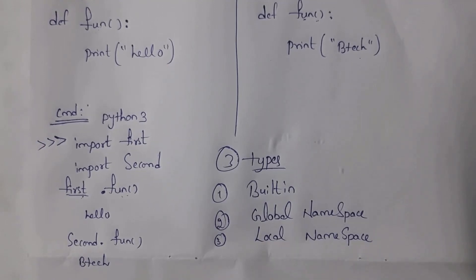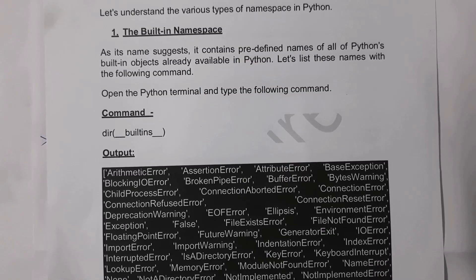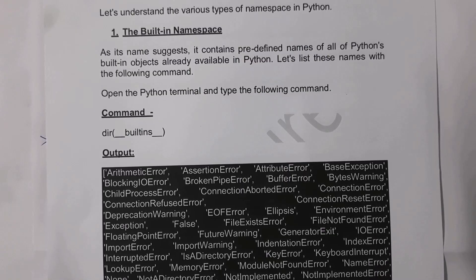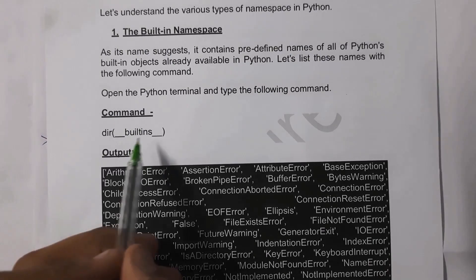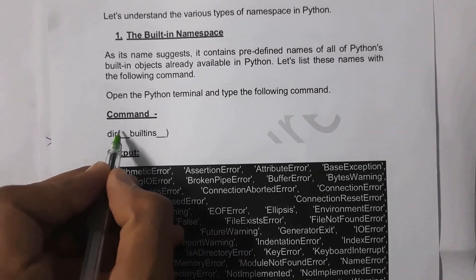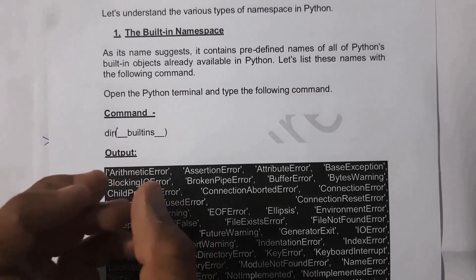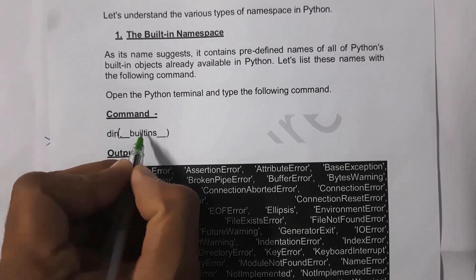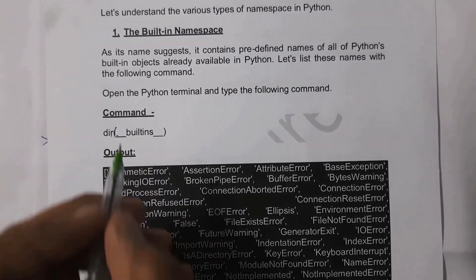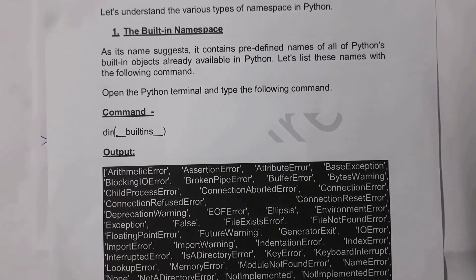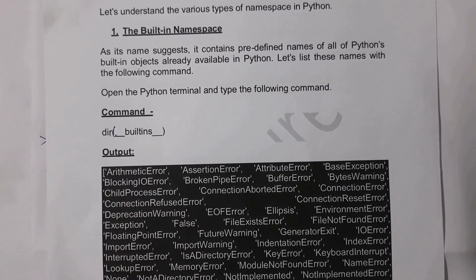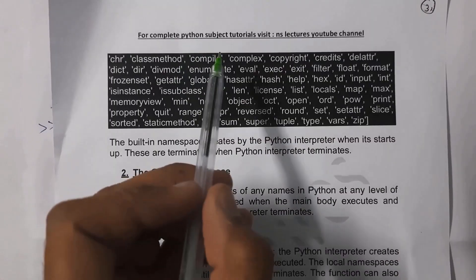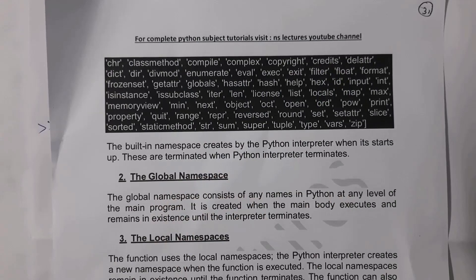Namespaces are classified into three types: built-in namespace, global namespace, and local namespace. To check all predefined names of built-in objects available in Python, type the command dir(__builtins__). This built-ins attribute represents predefined names of all built-in objects. The output shows names like ArithmeticError, complex, copyright, credits — all of these come under the built-in namespace.